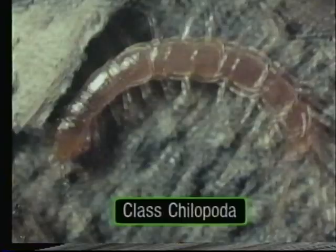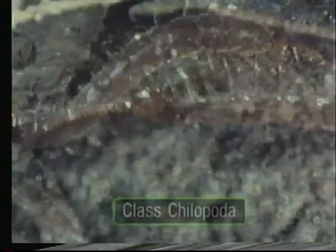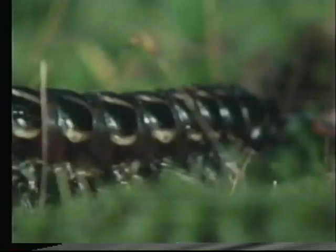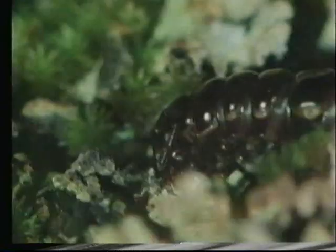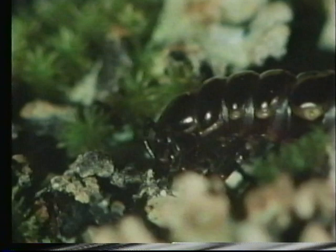Centipedes belong to the class Chilopoda. They have only one pair of legs on each segment; the first pair is armed with poison claws, used to catch small soil animals. Millipedes belong to the class Diplopoda. They have two pairs of legs on each segment. Most millipedes are herbivorous. Millipedes and centipedes are sometimes classed together as the Myriapoda, or animals with many feet.